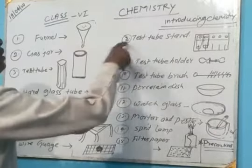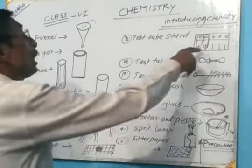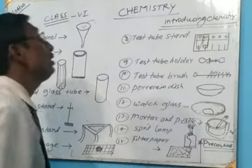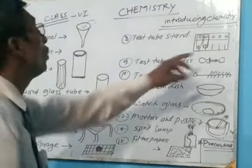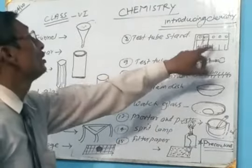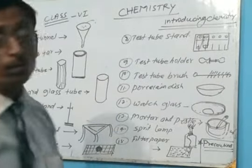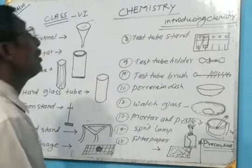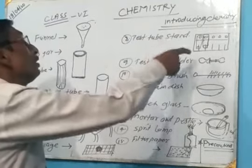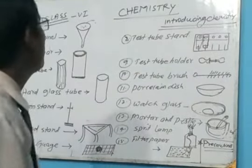Then come on to the next one: test tube stand. What is a test tube stand? A test tube stand is a type of stand in which test tubes are kept safely and there is no risk of breaking. Because we know that test tubes left generally will break down and there is loss of the substance. So we can keep them safely in this system.